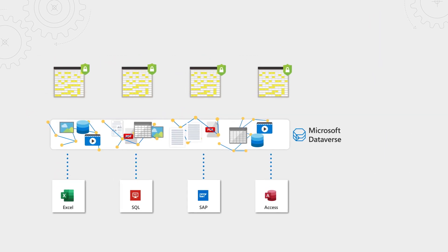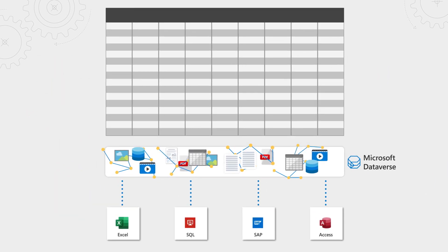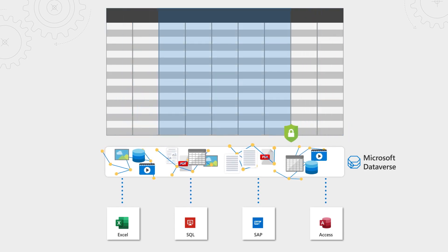The layer beyond that is the data itself. That includes mechanisms to secure data stored in Dataverse, as well as data being accessed at runtime via connectors. For external data, you can control access to specific data sources through data loss prevention policies. For data stored in Dataverse, you can control data access right down to a specific table, field, or even record.